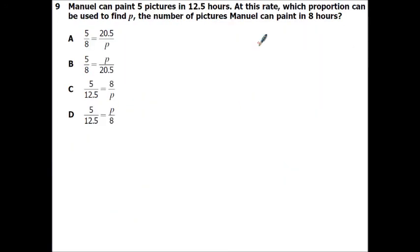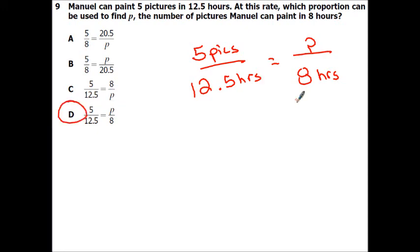Number 9. Manuel can paint 5 pictures in 12.5 hours. At this rate, which proportion can be used to find p, the number of pictures Manuel can paint in 8 hours? So you always just compare what you first have. So it was 5 pictures in 12.5 hours, and that's going to equal - since they gave you hours on the bottom here, we're going to keep it on the bottom. And they wanted to represent the pictures in p. So it would be 5 over 12.5 equals p over 8.